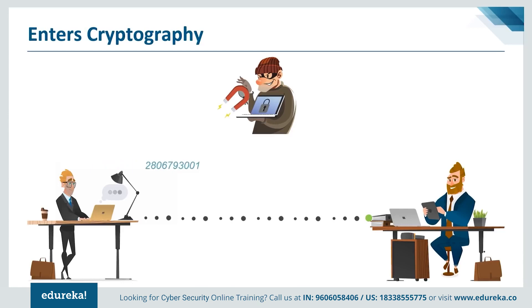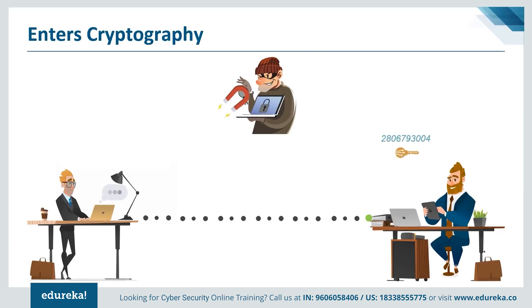Suppose Eve discovers the message and somehow manages to tamper with it. When the message finally reaches Sam, Sam would need a key to decrypt the message to recover the original plain text. Using the key he would convert the ciphertext to the numerical value corresponding to the plain text. After using the key for decryption, what will come out is either the original plain text message or an error. This error is very important — it is the way Sam knows that the message sent by Andy is not the same as the message he received, telling us that Eve has tampered with the message.